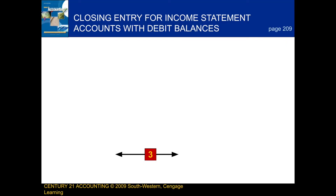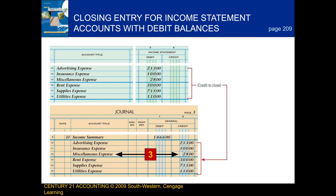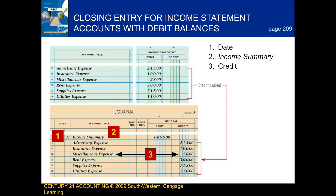Next, we're going to be talking about the closing entry for income statement accounts with debit balances. When we record this closing entry, there are a few steps we follow. First, we write the date. Next, we write in the words income summary. After that, we write our credits. Remember that expense accounts have normal debit balances, so in order to close them, we need to credit them. And the last thing we do is write in the debit amount. The sum of all of the expense accounts added together should equal the income summary amount listed here.